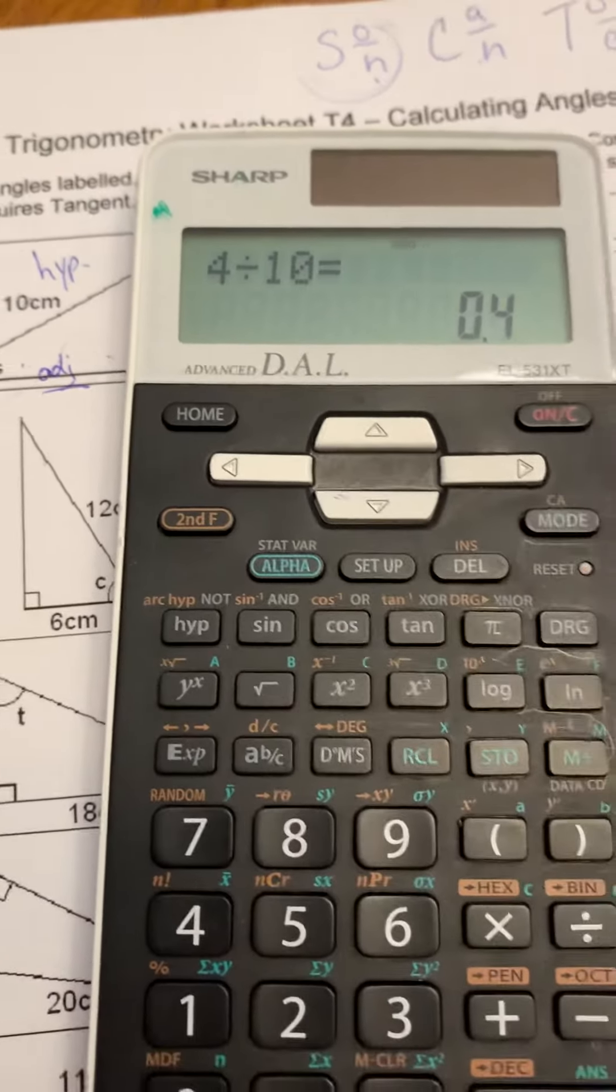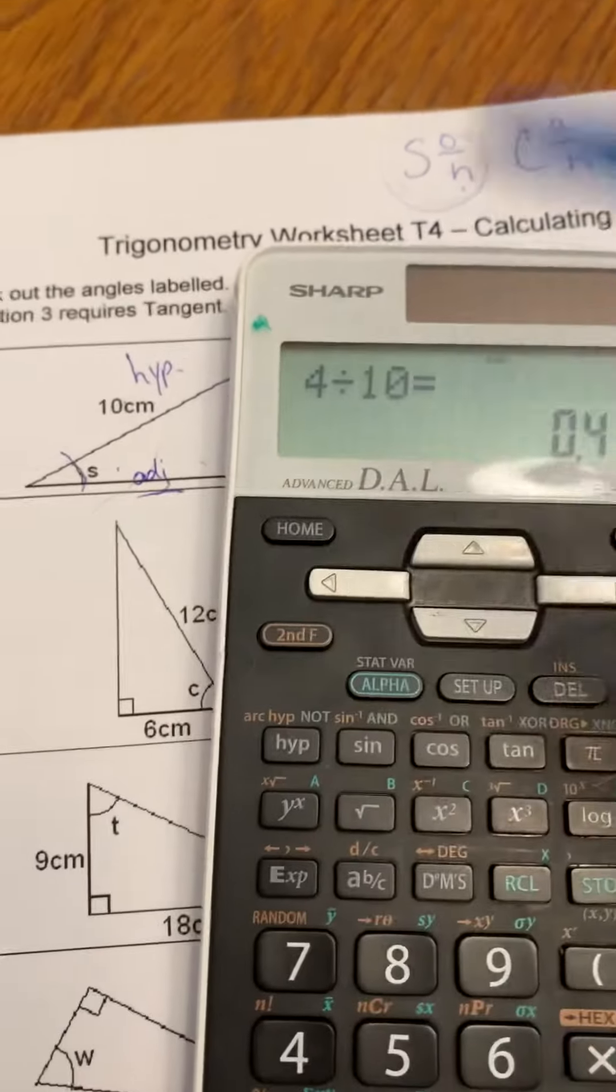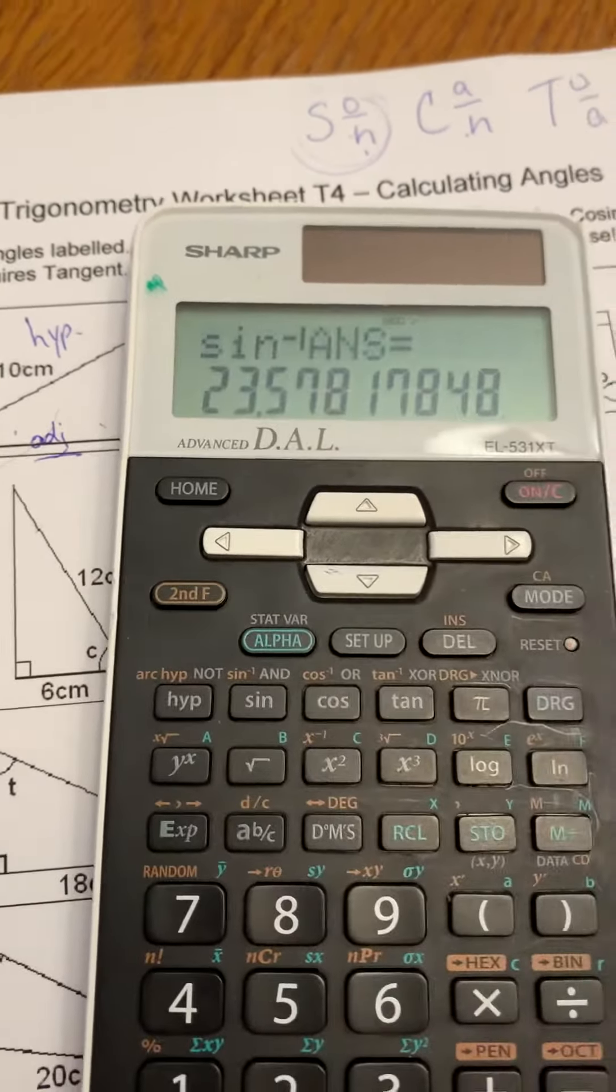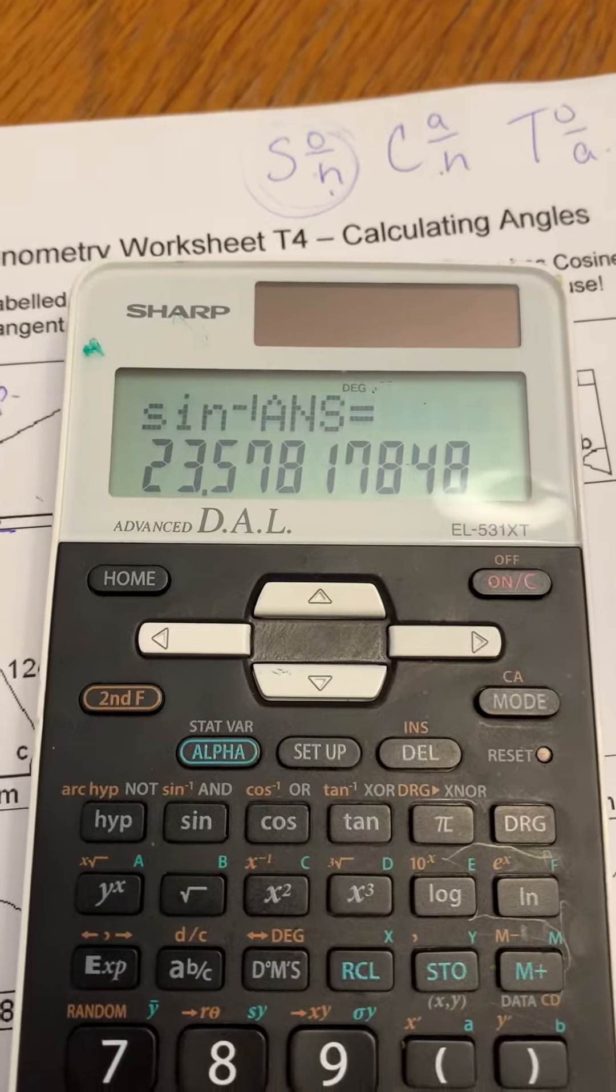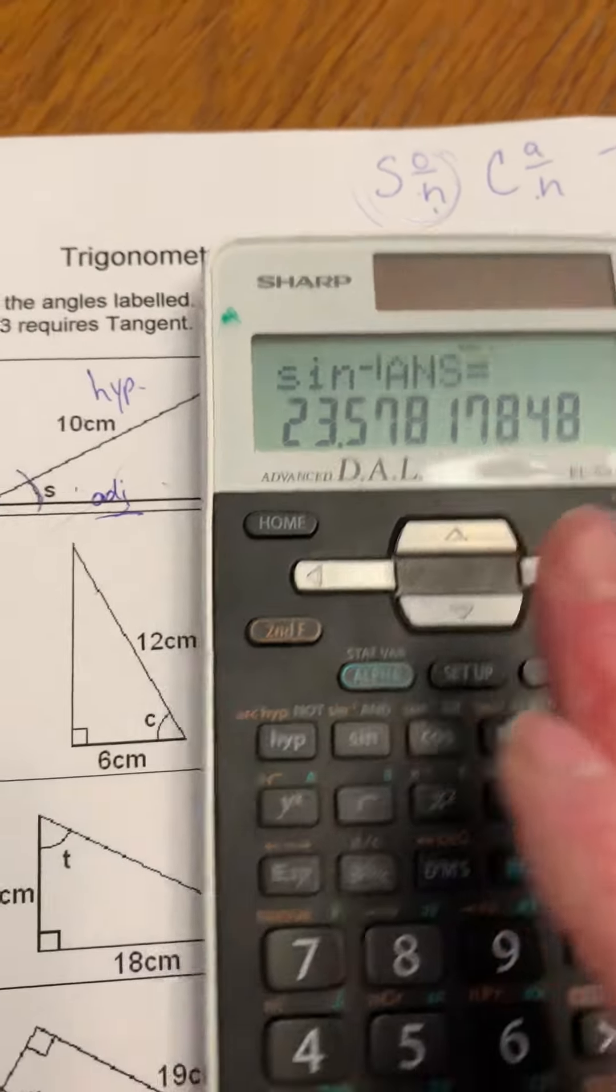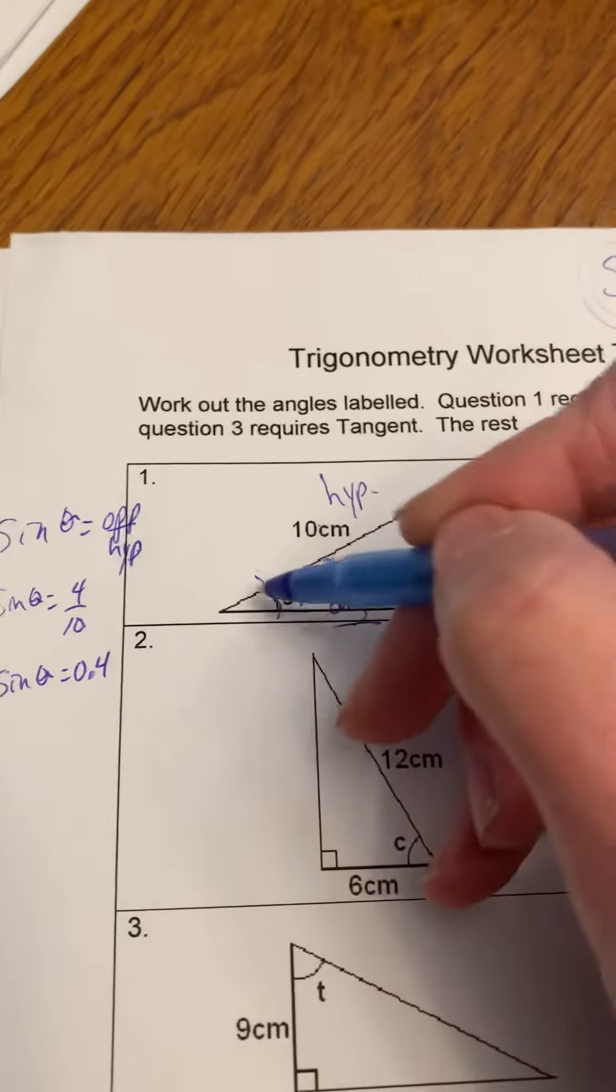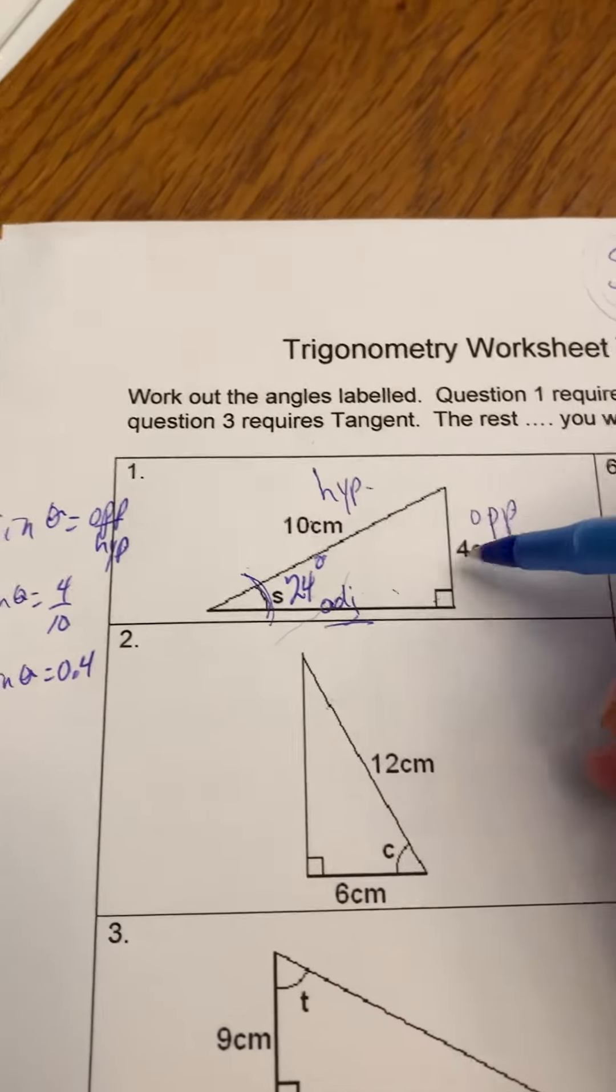And now you know you're going to use the sine, so you hit second function or shift. We're going to do the inverse of sine, which is 23.6. Okay, so I'd be comfortable right now for you telling me that this is 24 degrees. So you found angle s, the unknown angle.